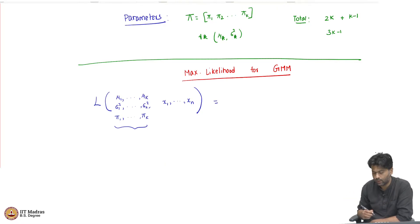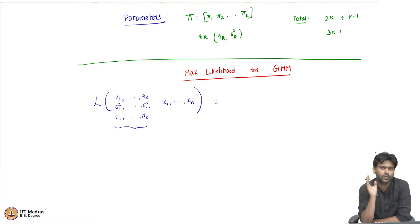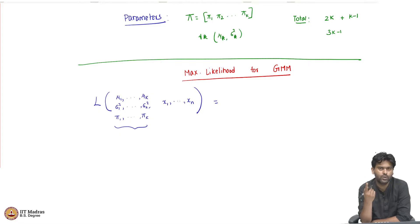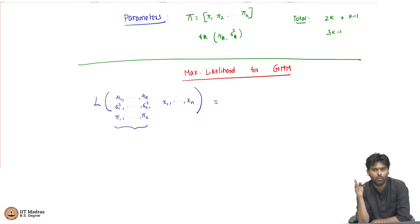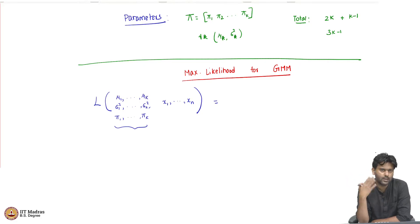The IID assumption still holds. Every data point is generated according to the same two steps. Knowing the outcome of the first data point does not affect the probabilities of the second data point taking a certain value — independence still holds. And it is the same process that generates each data point, so identically distributed also holds.